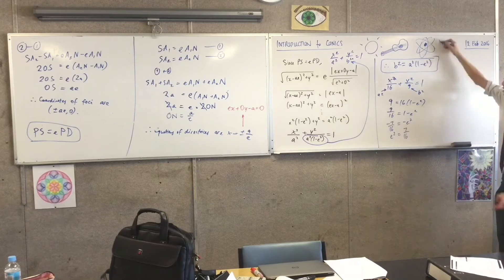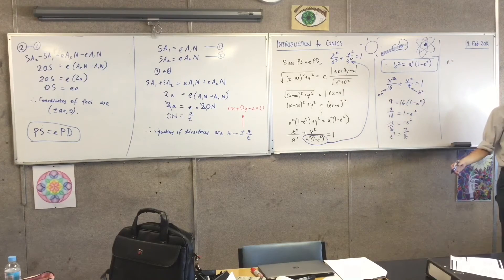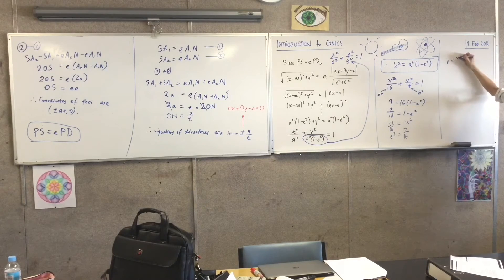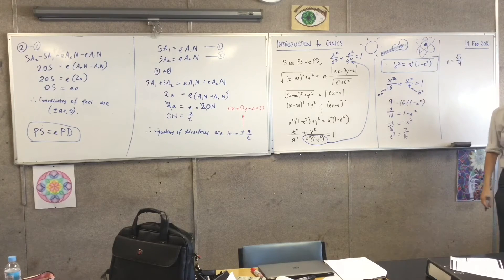So I get that I've just run out of space, but that means that e, which is a ratio, don't forget, so that's why I can ignore the negative solution, e is going to be negative... sorry, root 7 on 4.